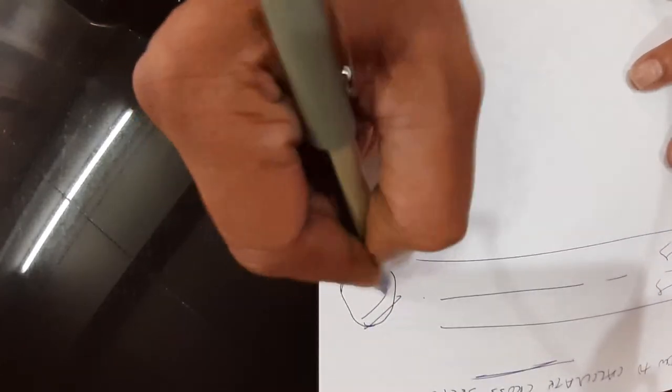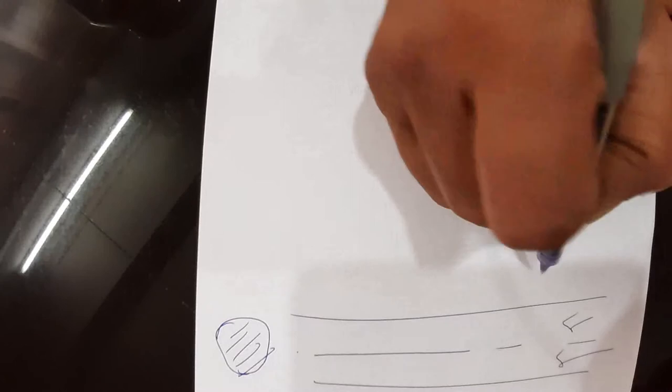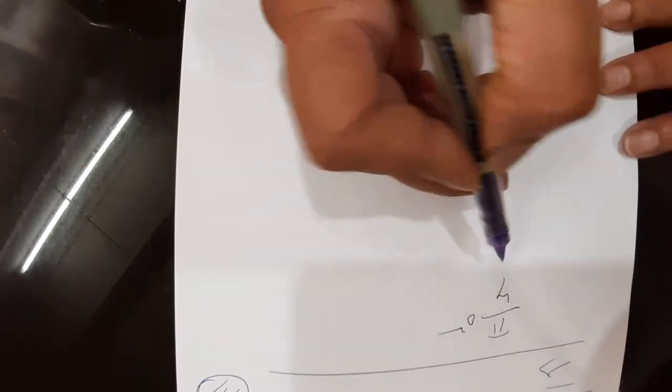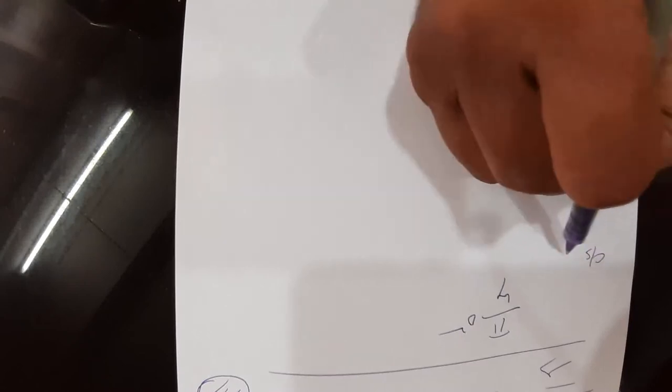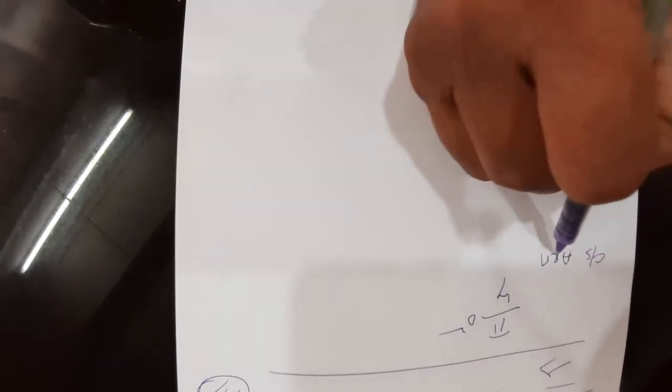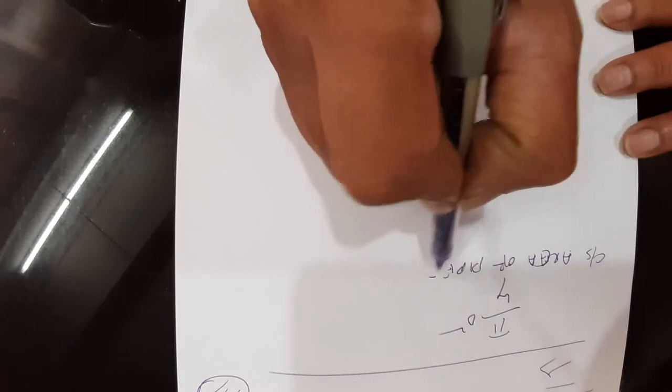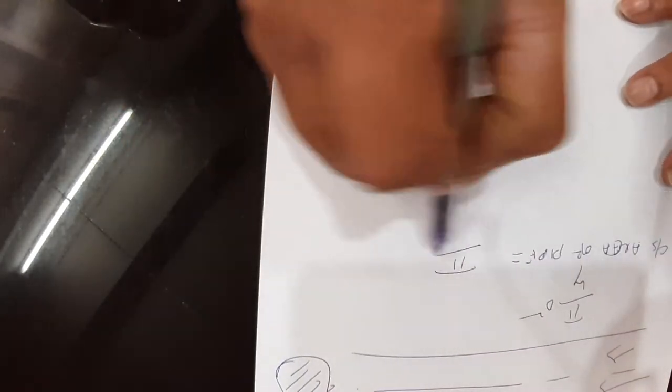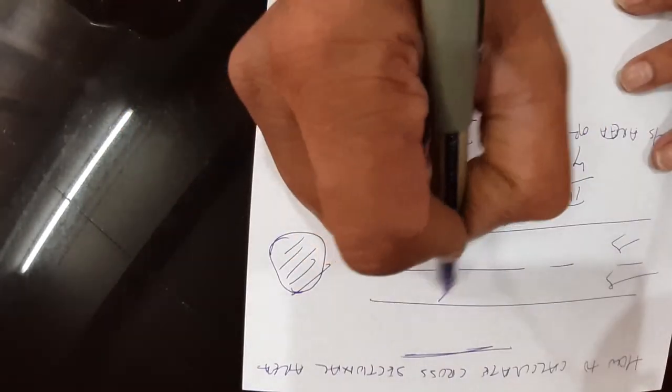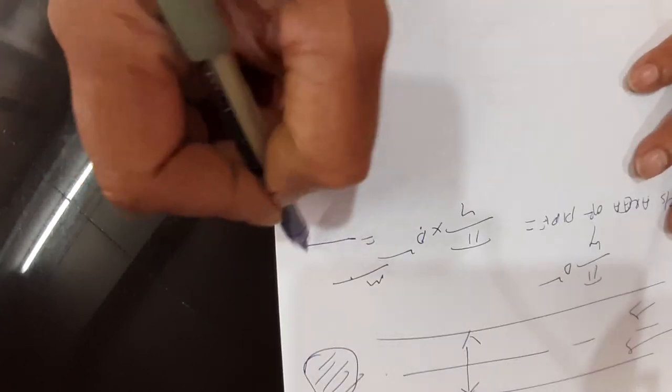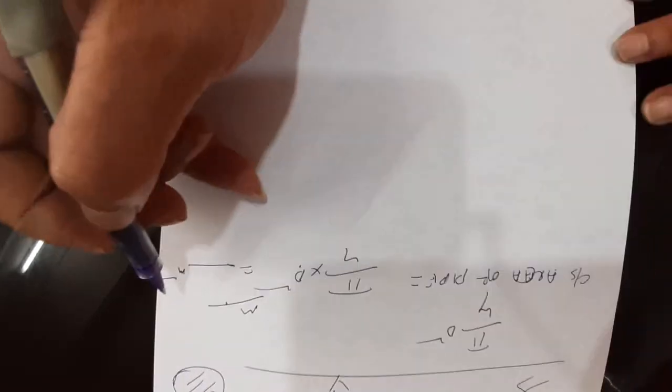The area of the circle is given by pi by 4 d square. Hence the cross sectional area of pipe is given by π/4 × d², where d is the internal diameter of this pipe. It should be measured in meters, so you get the answer in meter square. Remember this.